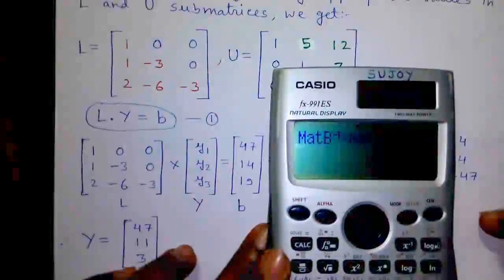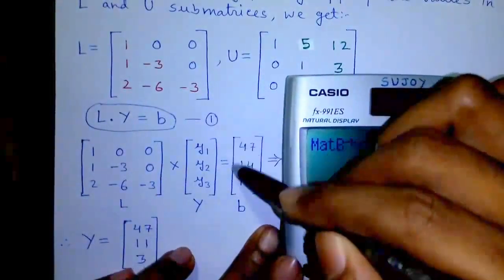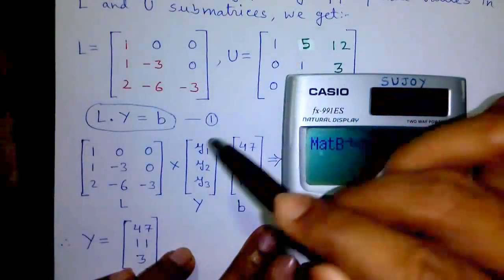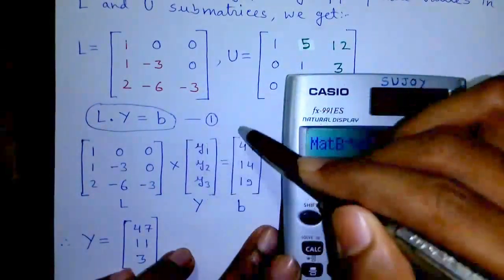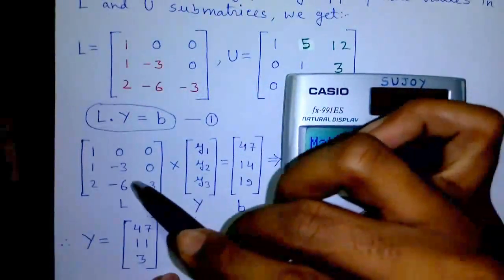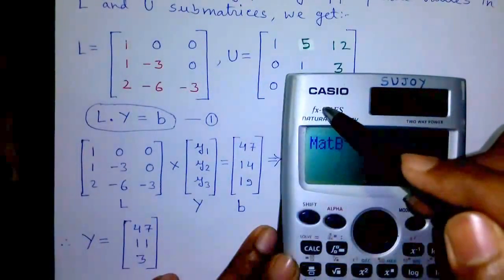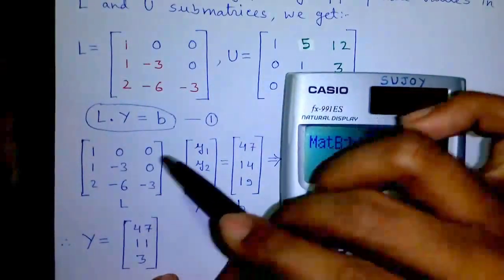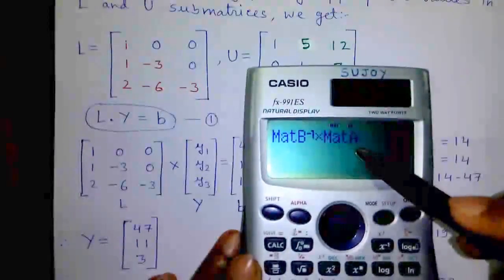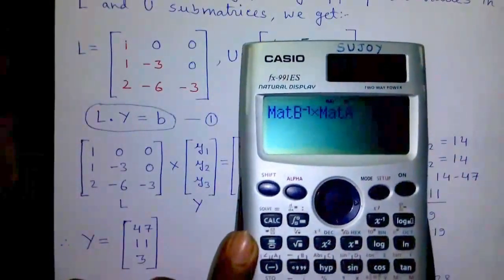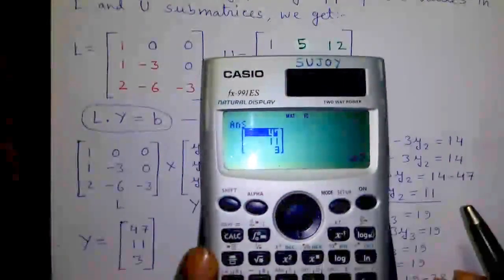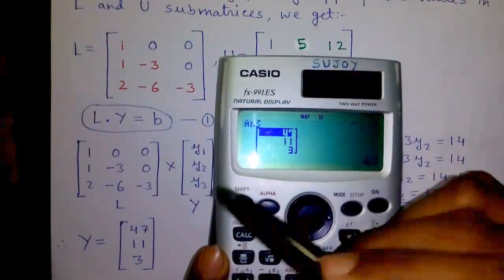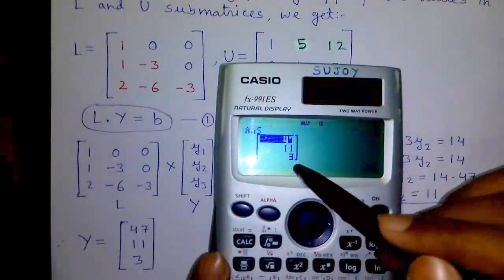Calculator trick number 2: if you have matrix L and matrix B, you can obtain matrix Y directly using the formula matrix L inverse into matrix B equals matrix Y. Matrix B inverse into matrix A equals 47, 11, and 3, which is our matrix Y.